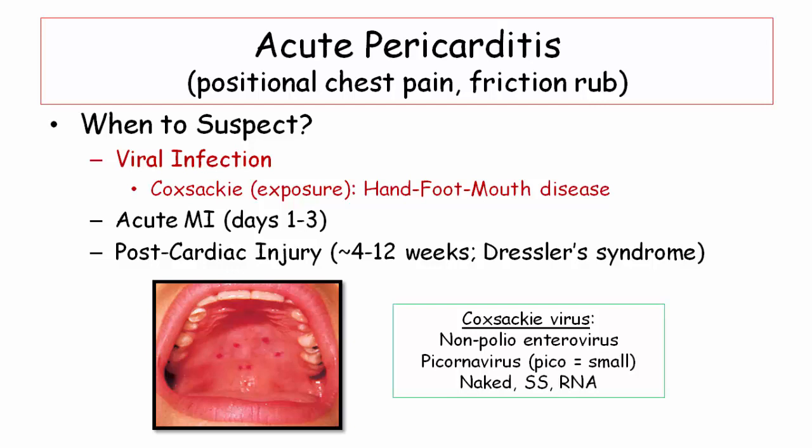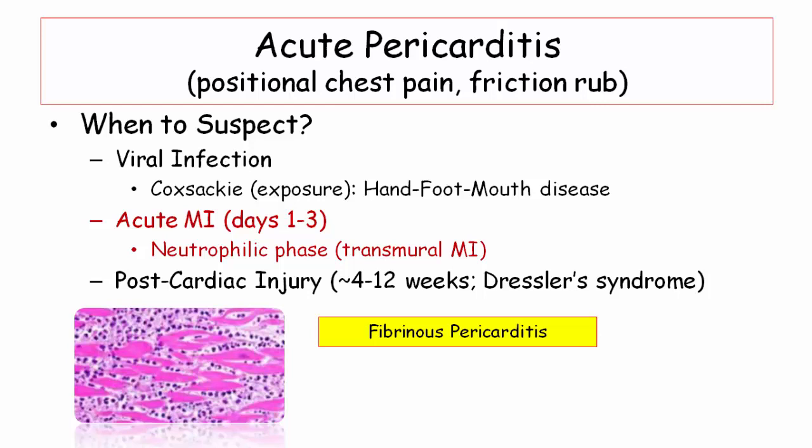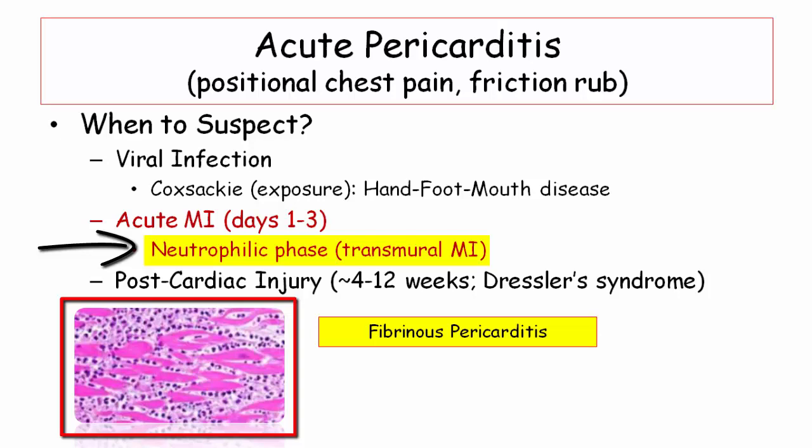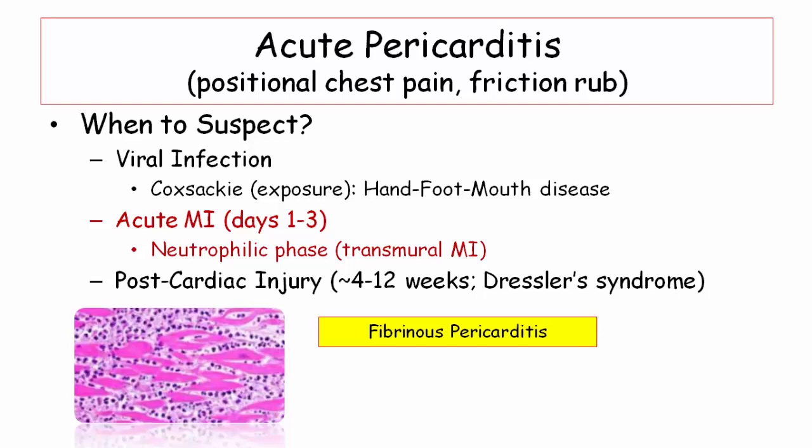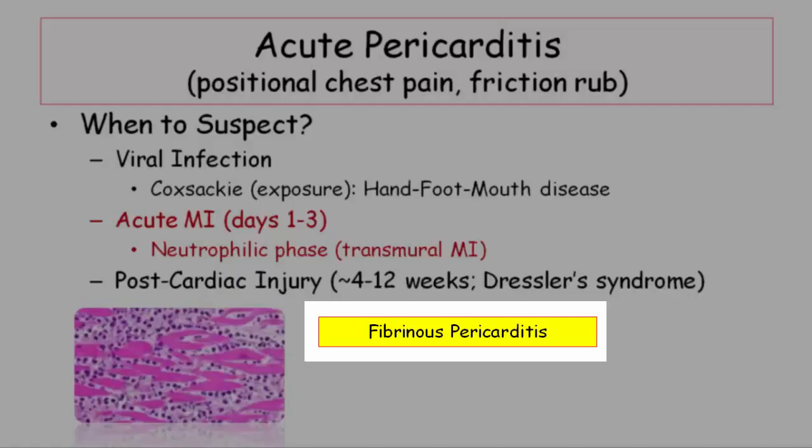The next scenario will be in the post-MI phase. Typically, the patient will have a transmural infarction with inflammation of the overlying epicardial and pericardial surface. The questions will typically relate to the pathologic phase of myocardial injury, that being the neutrophilic phase. Recall, the macrophage phase occurs on days 5 to 10 and is associated with cardiac or pulmonary muscle rupture. The classic description is that of fibrinous pericarditis, as opposed to hemorrhagic, pyogenic, or serous.